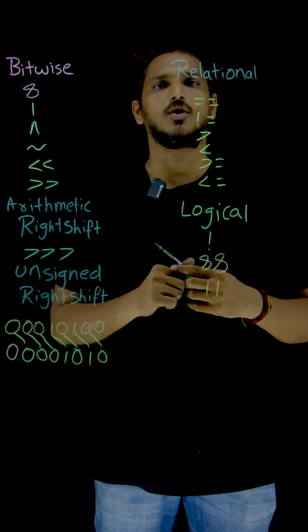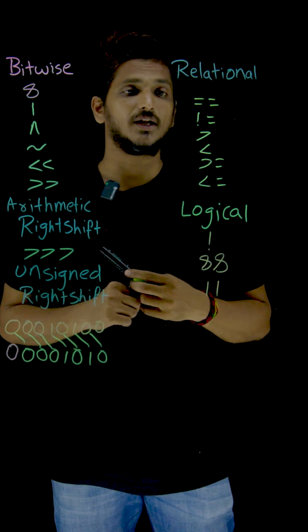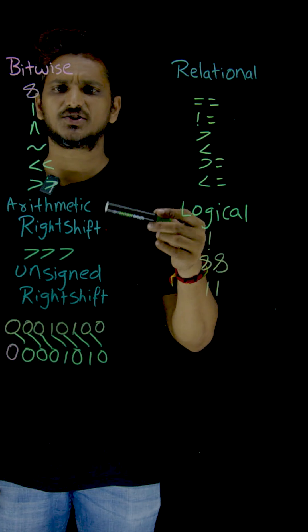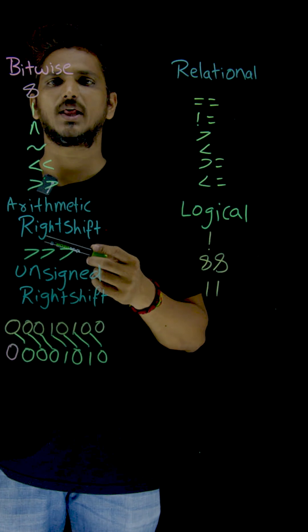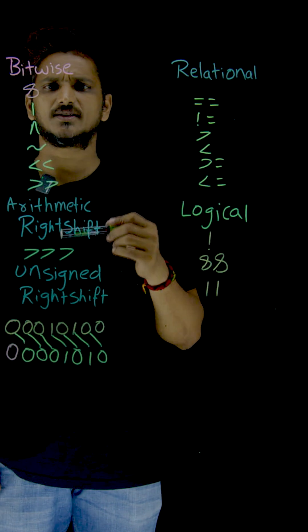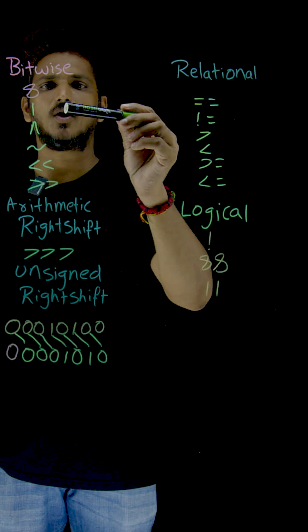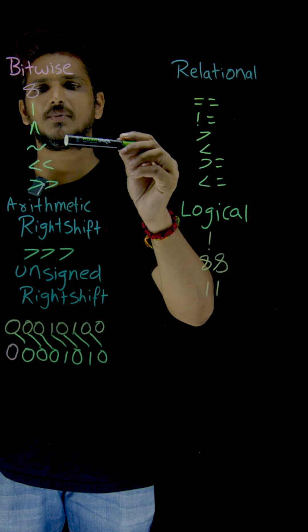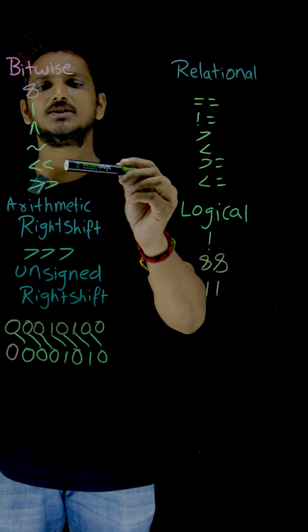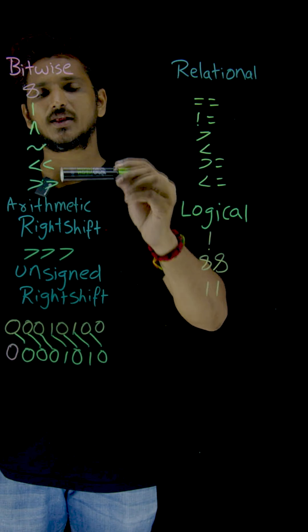Now coming to bitwise operators. Here, one extra operator is available in Dart programming. The remaining operators are the same: bitwise AND, bitwise OR, bitwise XOR, bitwise NOT (complement operator), left shift operator, and right shift operator — all the same as in previous programming languages.